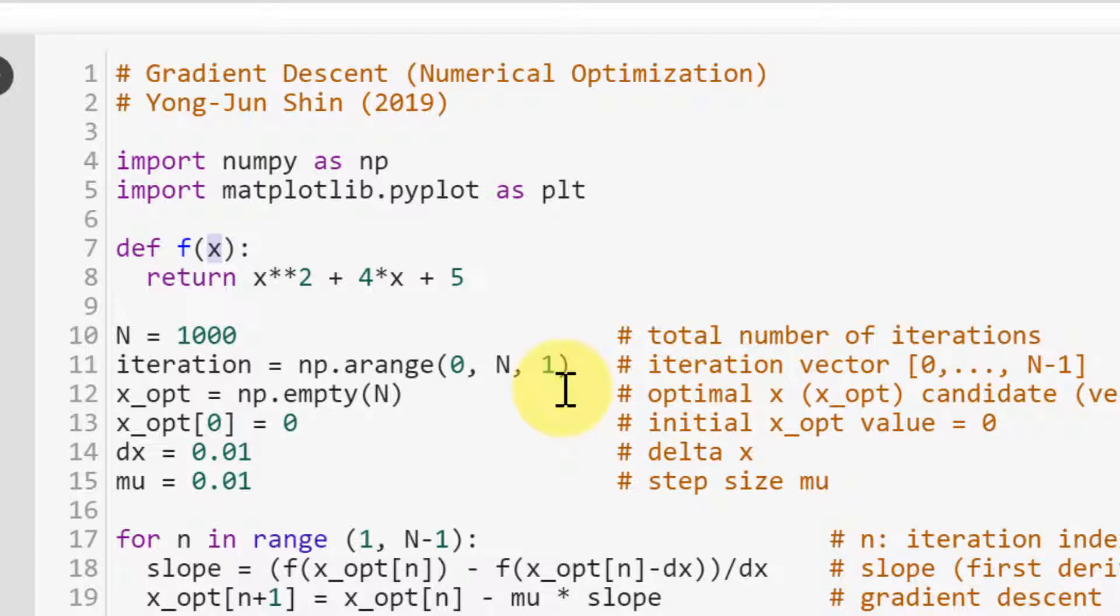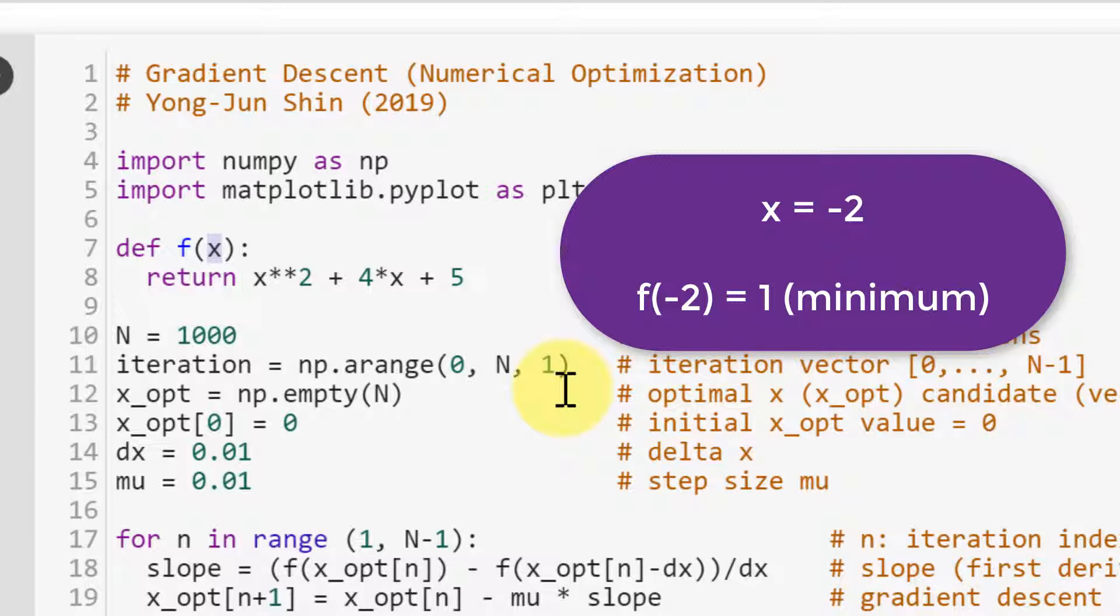So this is basically a quadratic function that generates a problem. And we know that when x is negative 2, the function has the minimum value, which is 1.